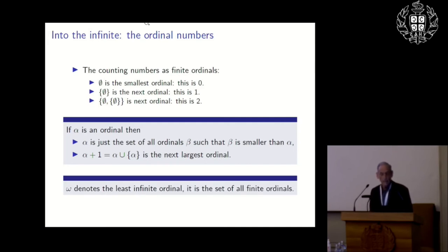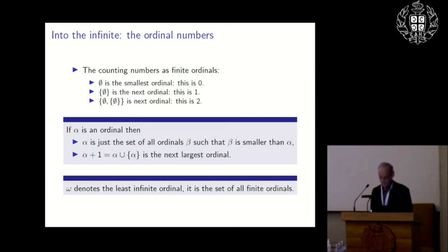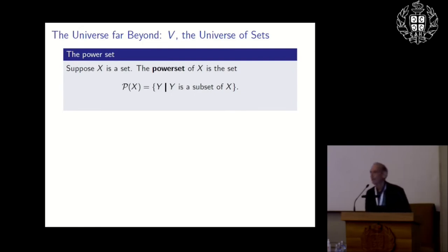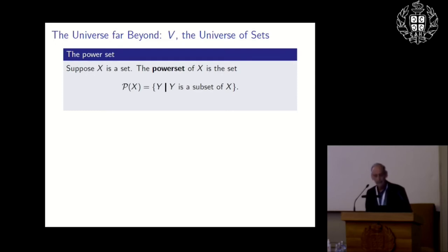In set theory there's an infinite ordinal — that's what distinguishes set theory from number theory. Omega denotes the least infinite ordinal. In the universe of sets, a basic conception is that of the power set. If you have a set X, the power set of X is the collection of all subsets of that set. It is a formal axiom that the power set exists for all sets.